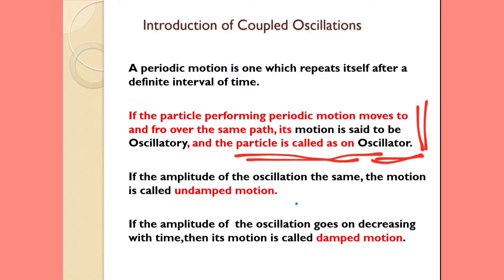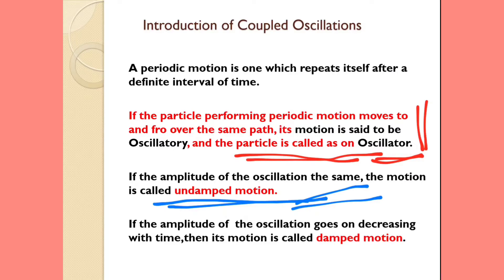Under the oscillatory motions there are different types. The first type is undamped motion. If the amplitude of the oscillation remains the same, then the motion is called undamped motion.